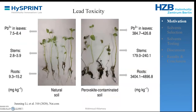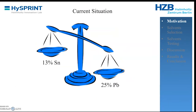In this slide we can see proof of lead toxicity. On the left hand side we have plants grown in natural soil, while on the right hand side the same plants are grown in perovskite-contaminated soil. The effect is very obvious — lead atoms were found in the leaves. The current situation between lead halide perovskites and tin halide perovskites is not in the favor of tin. Lead has the toxicity problem, while tin is eco-friendly.